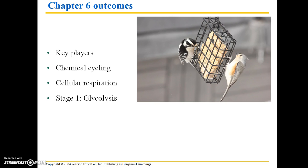For chapter 6, our outcomes are key players having to do with cellular respiration and chemical cycling. The first stage of cellular respiration is glycolysis, the second stage is the citric acid cycle, and the third stage is the electron transport chain.